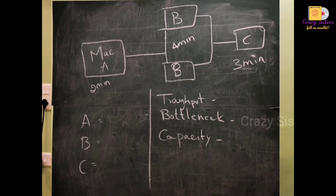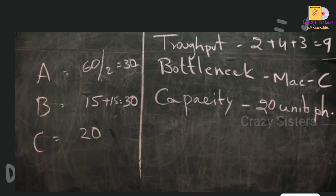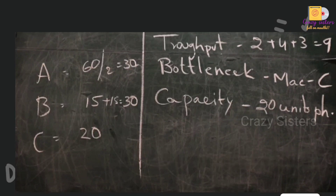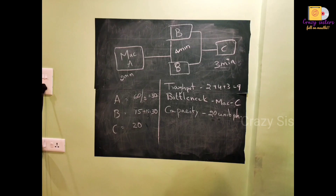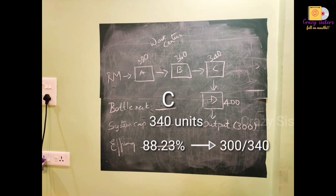Here is a somewhat different question — there are two production units. We will get 15 units from B. In this case, the bottleneck is C. System capacity is 340 units. Efficiency is nothing but output divided by bottleneck capacity, which gives us 88.23%.